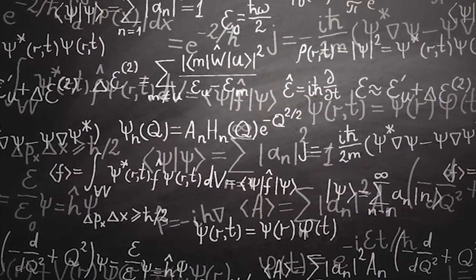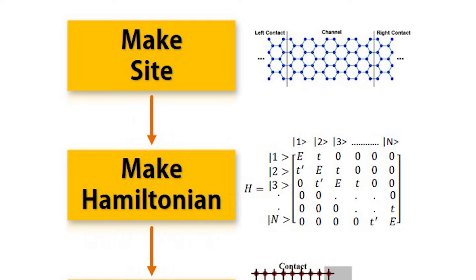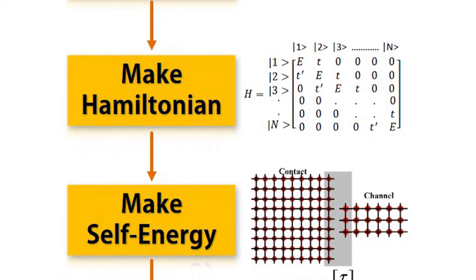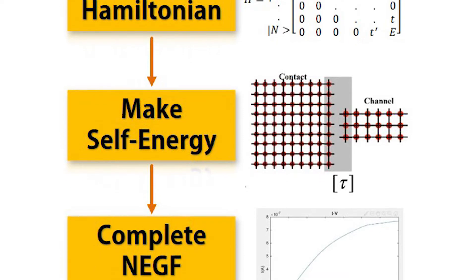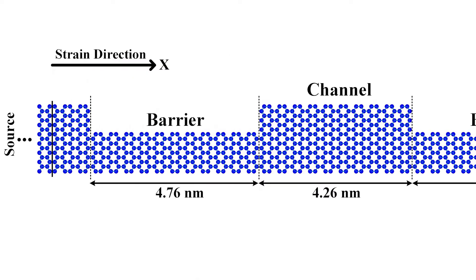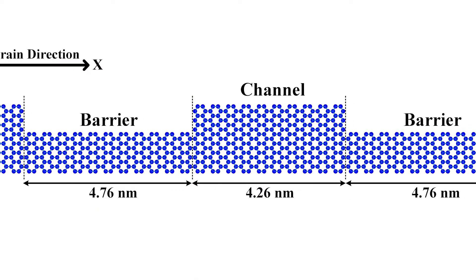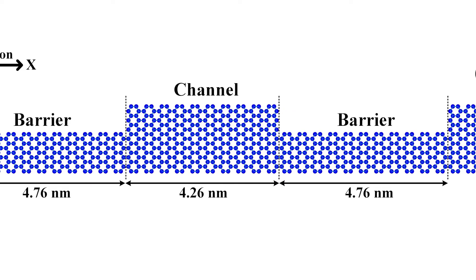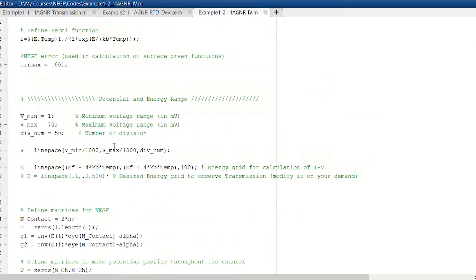We don't get stuck with quantum theories and formulas. Instead, I'll show you the steps that you need to follow to make your first nano device — an armchair graphene nanoribbon resonant tunneling diode. We start with coding in MATLAB, and I'll teach you the steps you need to follow to build your simulator platform.